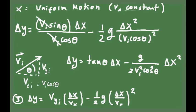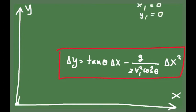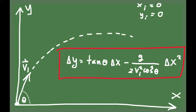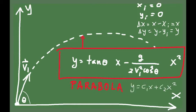This equation relates vertical displacement to horizontal displacement. If you throw a ball starting at the origin, the initial position is (0, 0) and the delta symbols can be dropped. The trajectory equation is y = tan θ · x − (g / 2v_i² cos²θ) · x². This equation is a parabola, since y is a function of the second power of x.